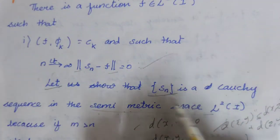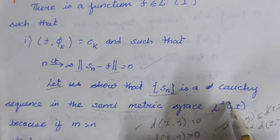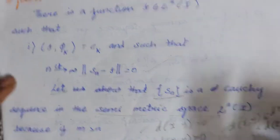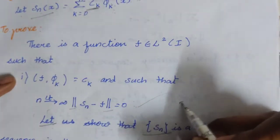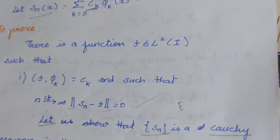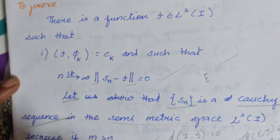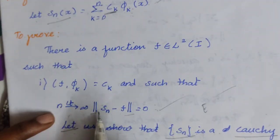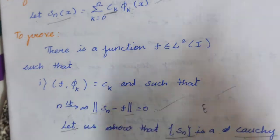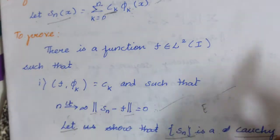We assume the sequence Sₙ is a Cauchy sequence in the semi-metric space L²(I). Every convergent sequence is a Cauchy sequence — convergent means the limit exists in the sequence. So the sequence is convergent and is a Cauchy sequence. That is why we have limit n tends to infinity of norm of Sₙ minus f equal to 0, since Sₙ is a Cauchy sequence.